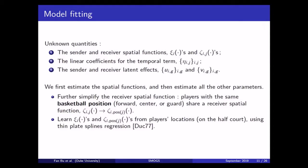So, to fit the model, we have to figure out three different sets of unknown quantities. First of all, the sender and receiver spatial functions. Second of all, the linear coefficients for the time varying covariates. And then, the sender effects and receiver effects, those latent vectors.